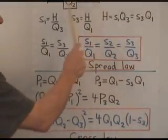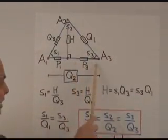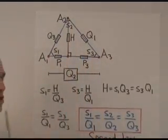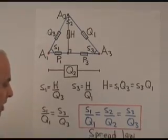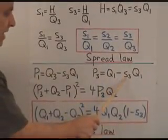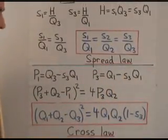Similarly in this triangle here, p3 is equal to q1 minus h. And so we write p3 equals q1 minus s3 q1 again, same expression.